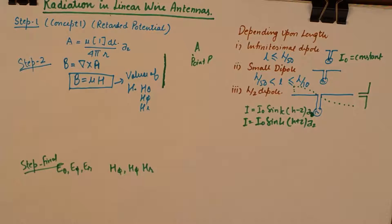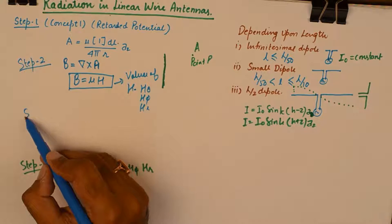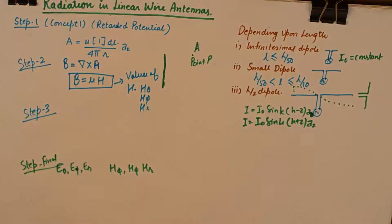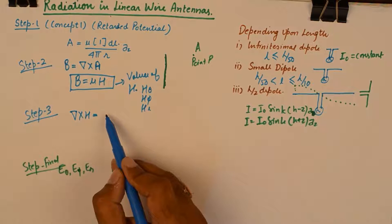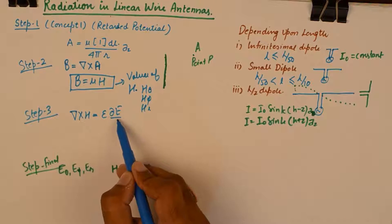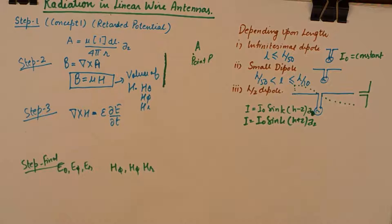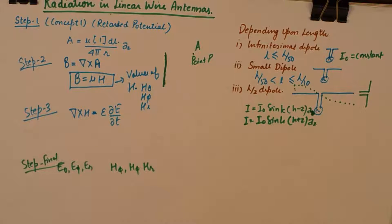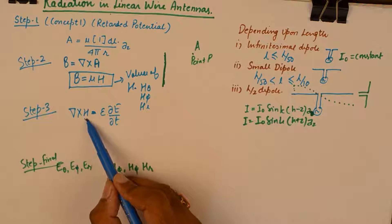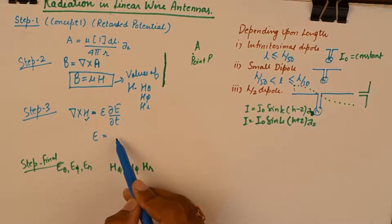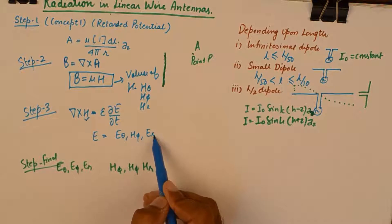Once we have the value of H in hand then we go to step number 3 which again is derived from Maxwell's equation that curl of H is equivalent to epsilon times partial E by partial t. This is by the way Maxwell's fourth equation considering that it's a lossless medium where sigma is zero. Once we know the value of H the values of E can easily be found out, E theta, E phi and E R. This set and this set together they form the radiation fields of an antenna.